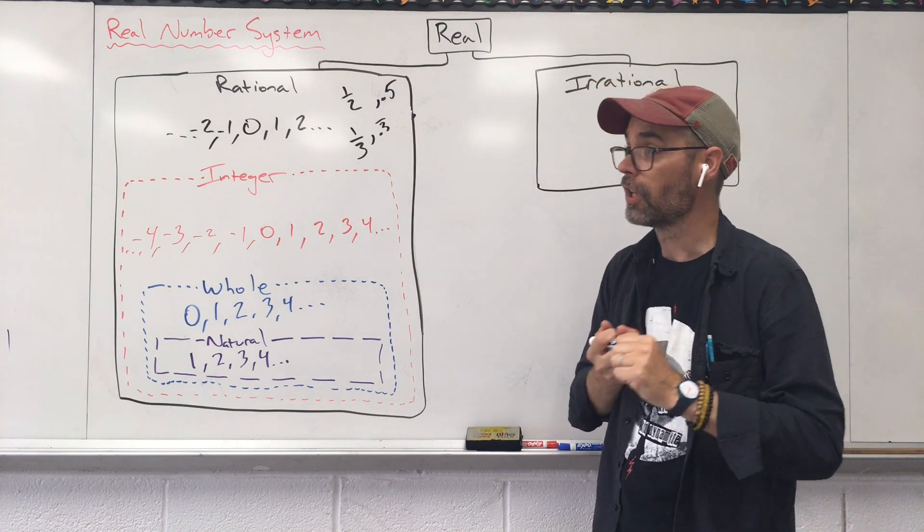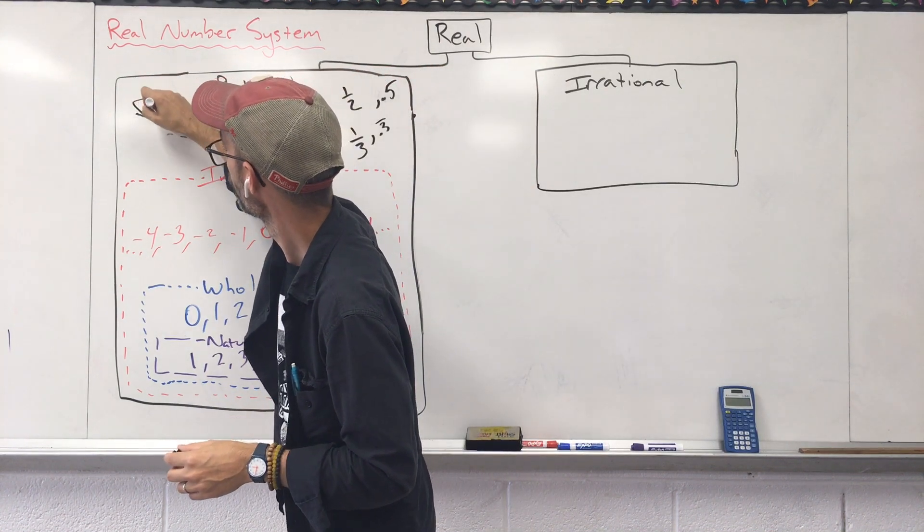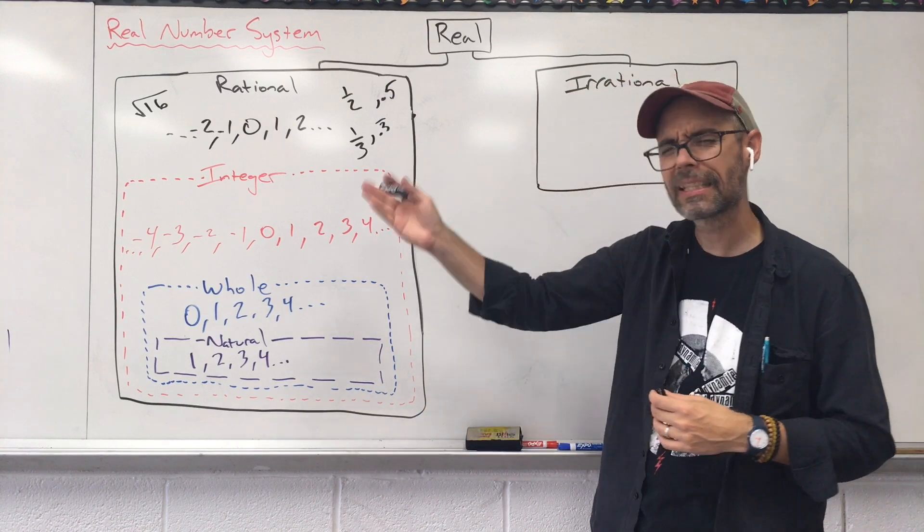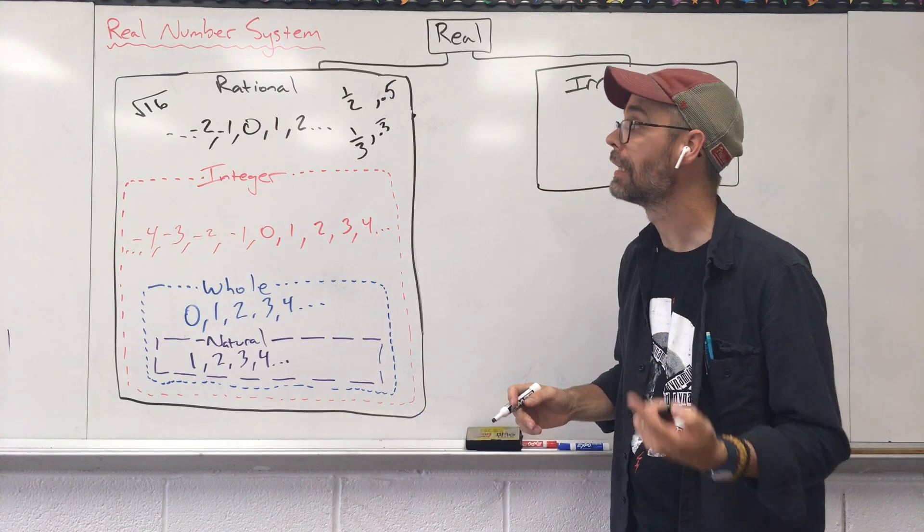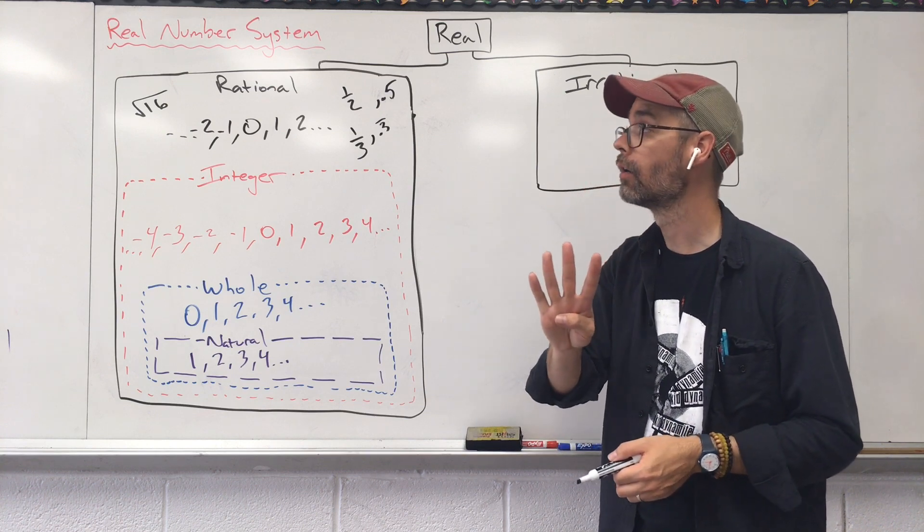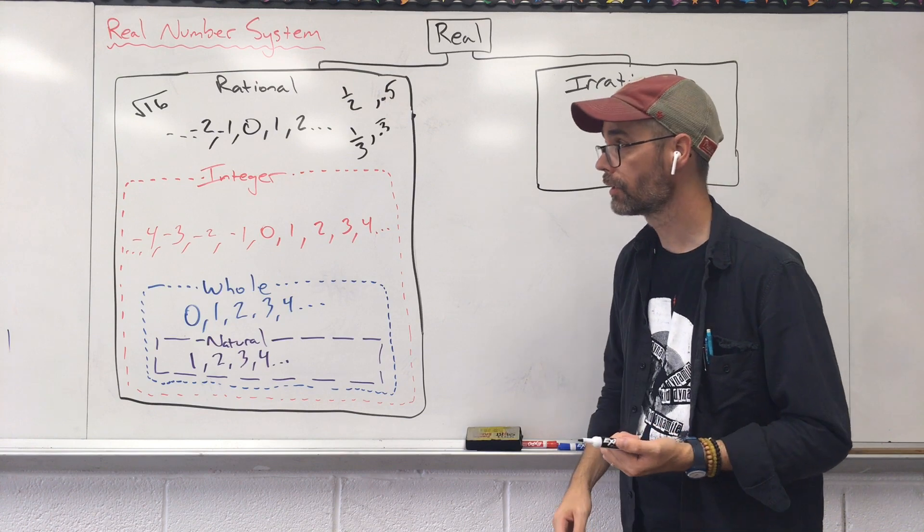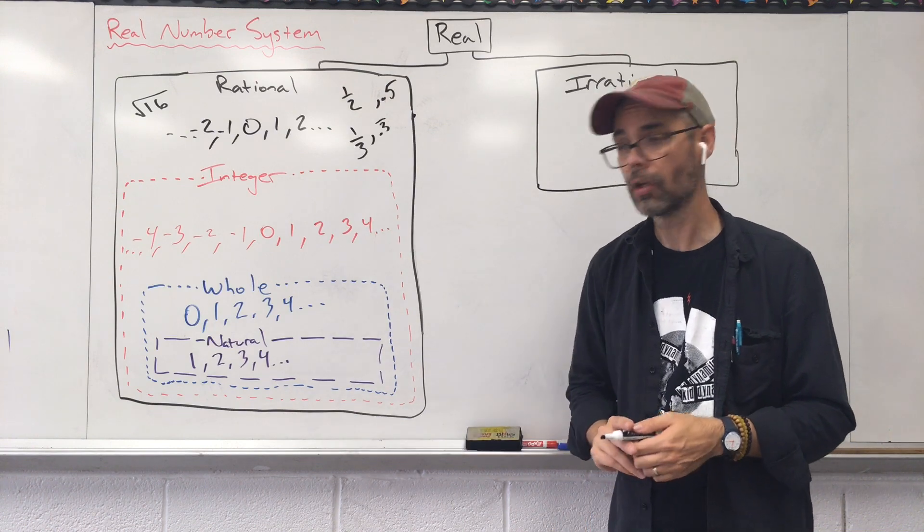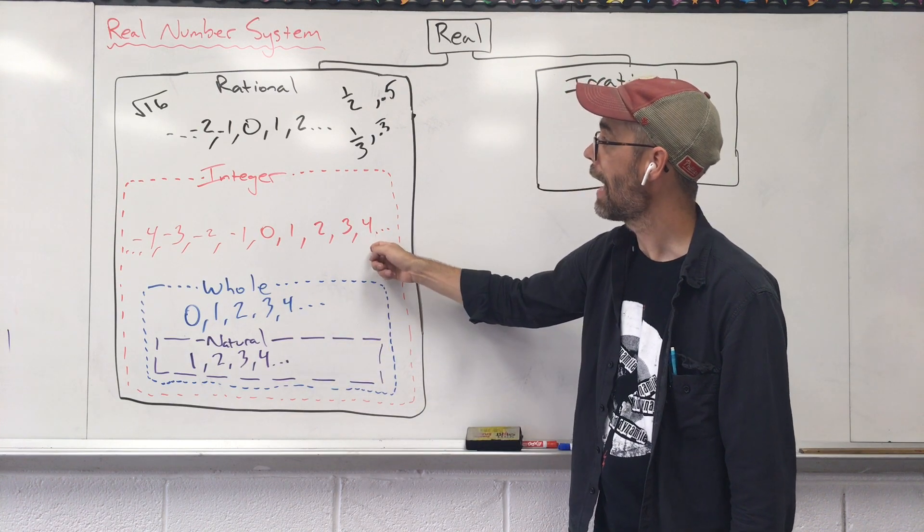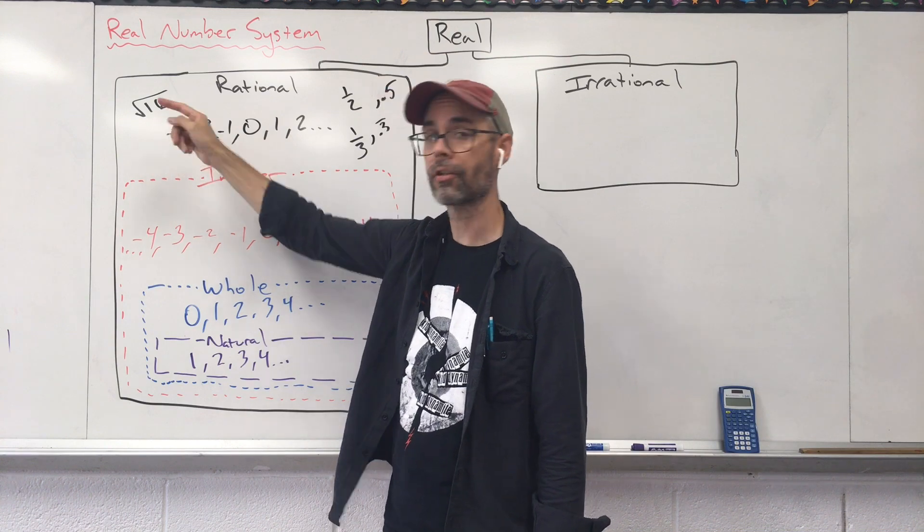You could also put in, let's just say, square root of 16. Well, square root. Can I simplify that? I can. The square root of 16 really means the number 4. So, if I ask what categories does the number 4 fall into, you're going to say, natural, whole, integer, and that's also 4. It's now rational.